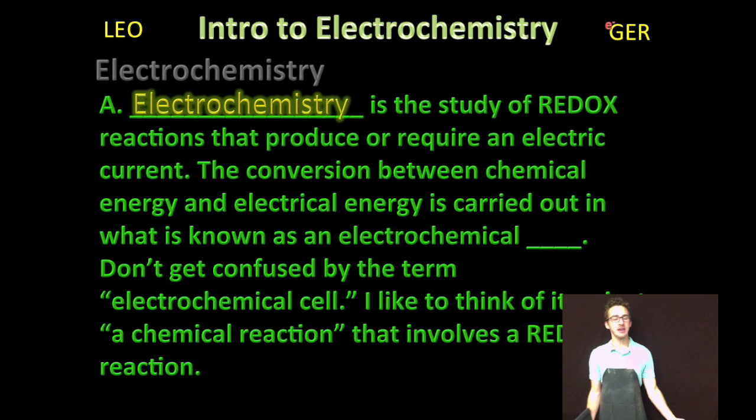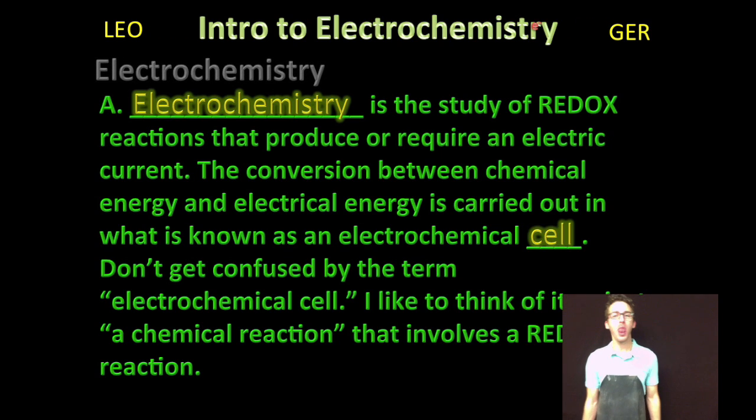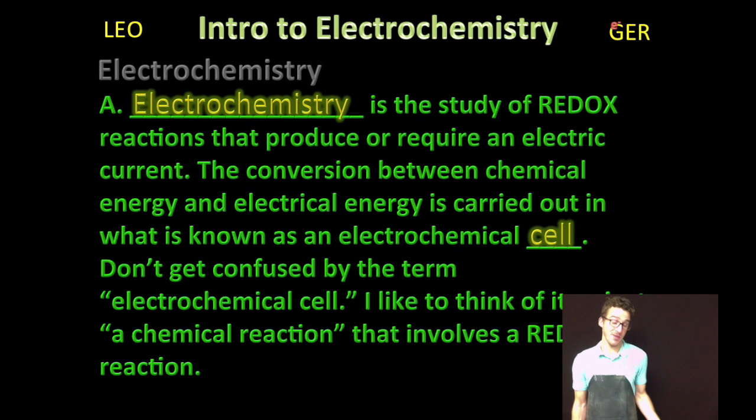Now this unit is all about electrochemistry. Electrochemistry is the study of redox reactions that produce or require an electric current. This is a really important subset of chemical reactions because we use it to power our lives. Converting chemical energy to electrical energy is carried out in what we call an electrochemical cell. Sounds confusing, but I just like to think of it as a chemical reaction that involves a redox reaction - gaining and losing electrons.